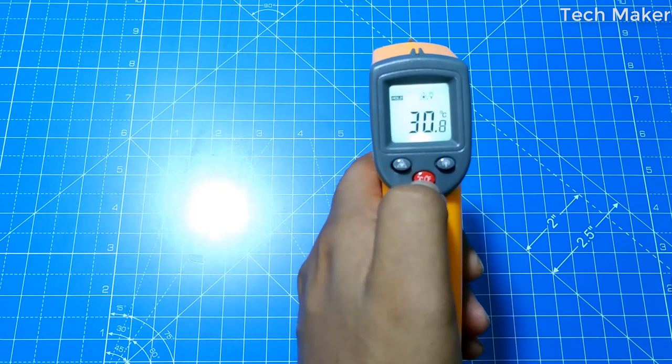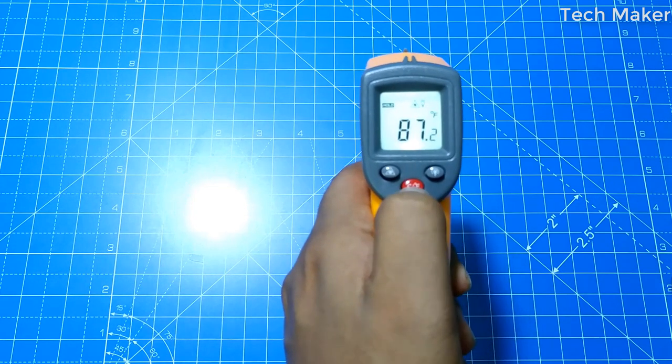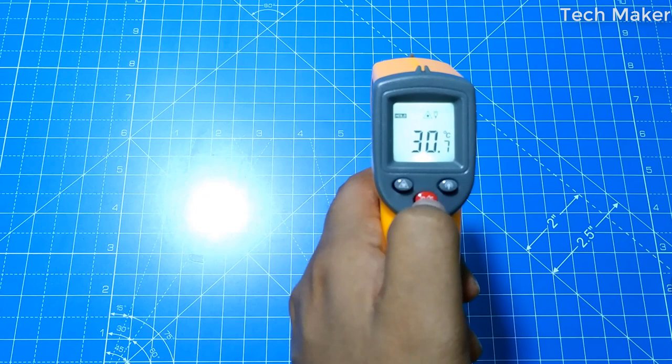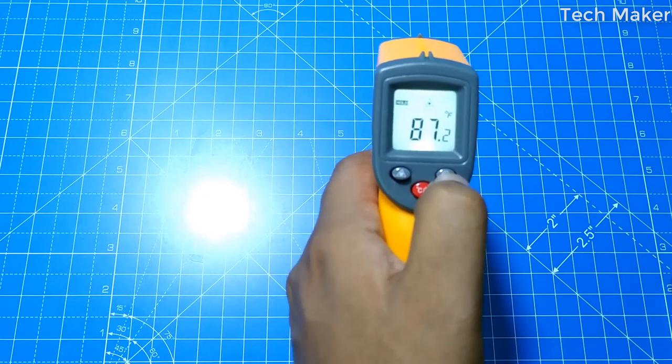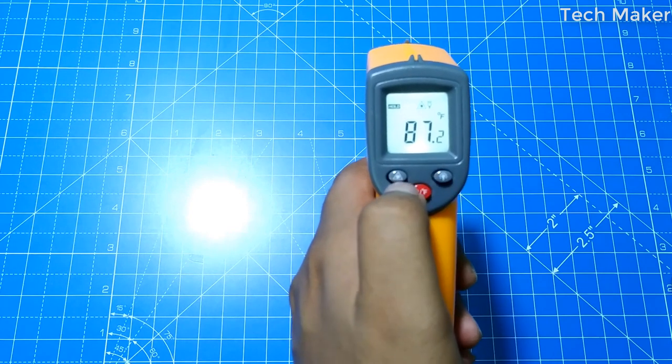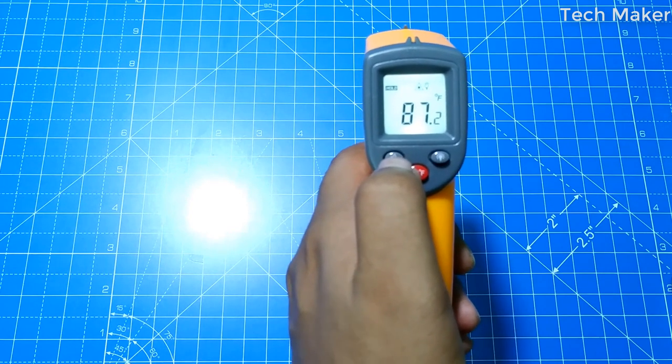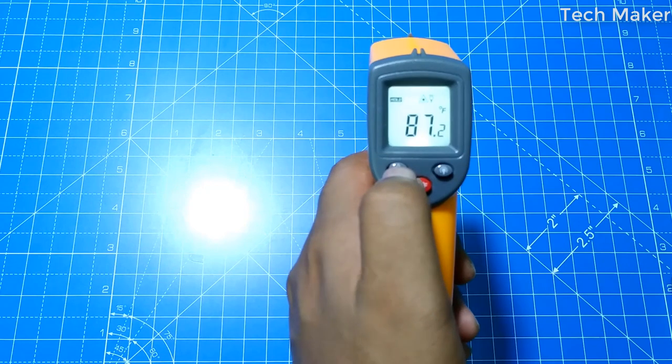And this will be useful to switch from centigrade to Fahrenheit. And this is to turn the backlight off or on. And this will turn off or on the laser pointer.